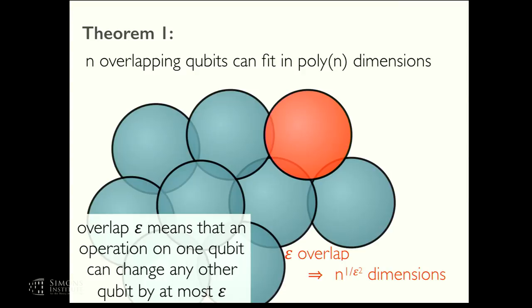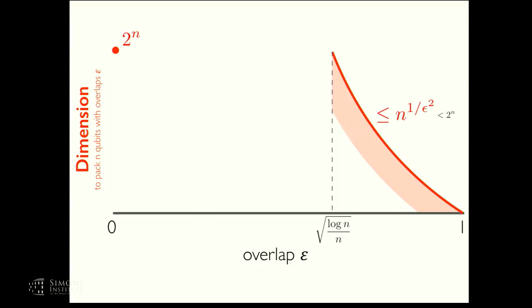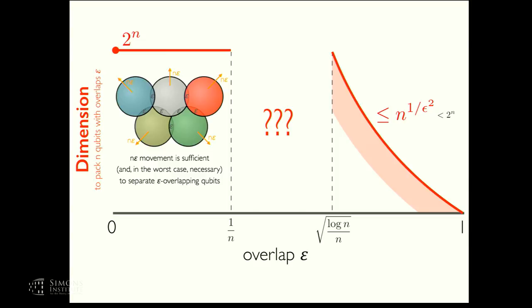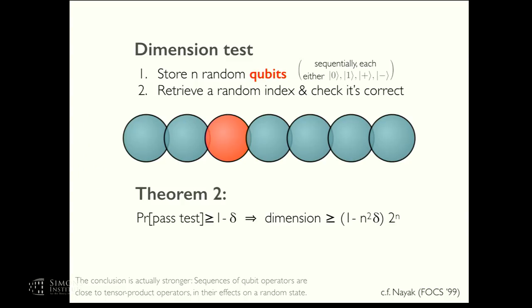So this is a definition of pairwise overlap and allowing pairwise overlap epsilon. Our first theorem says that you can in fact pack N qubits into just polynomially many dimensions, or more quantitatively, if the overlap is epsilon, then you can fit into N to the one over epsilon squared dimensions. This is by a random packing argument. This shows that if the overlap is large enough, roughly more than one over square root of N, then the number of dimensions can be much smaller than exponential. Conversely, we show that if the overlap is smaller than one over N, then the dimension really does need to be exponential.